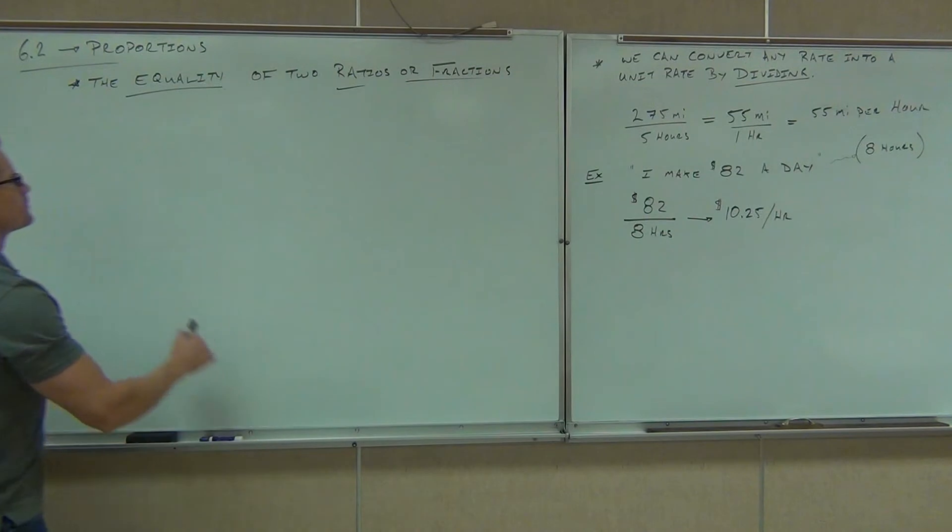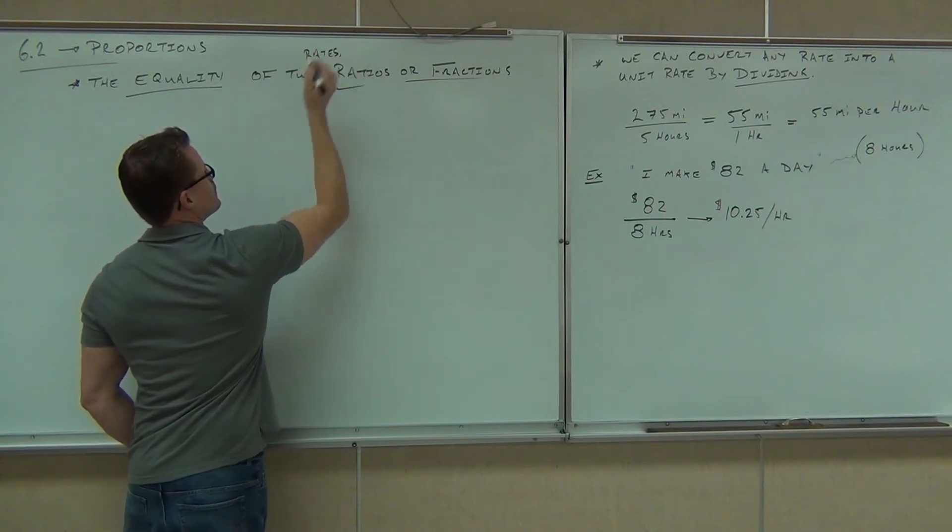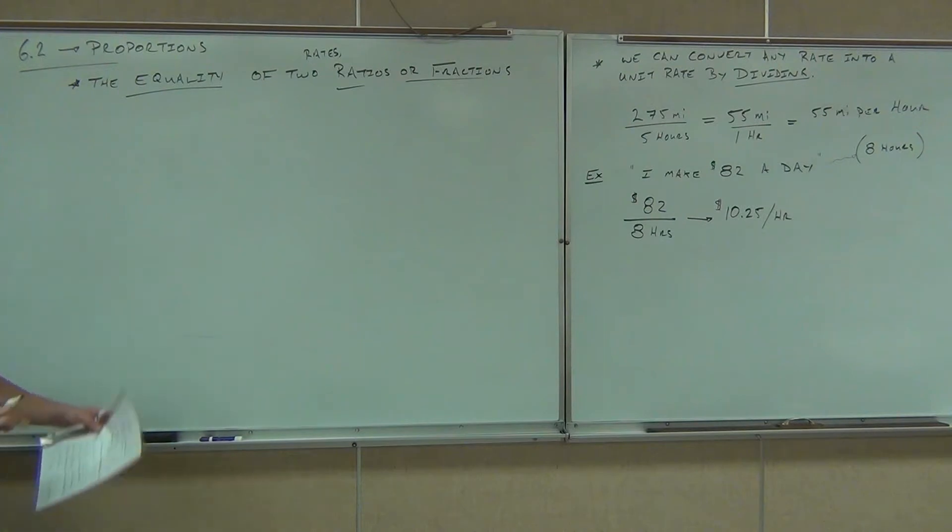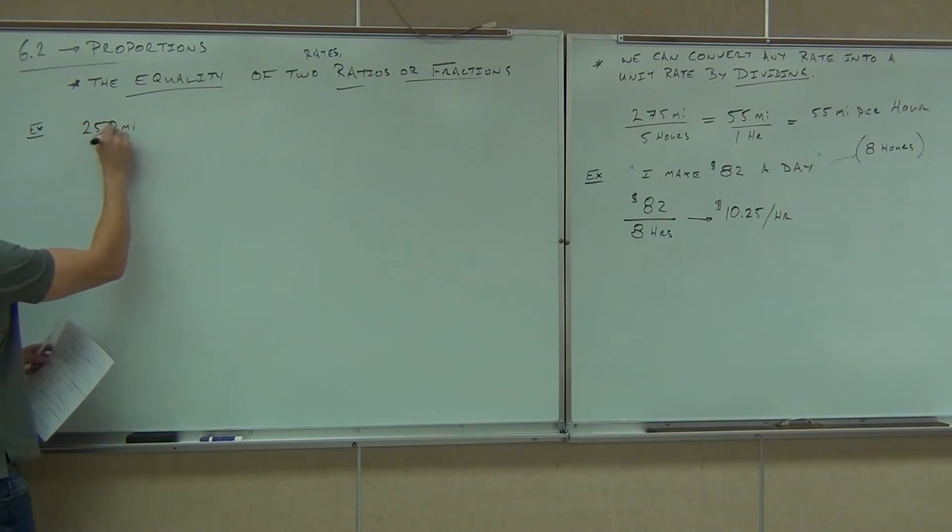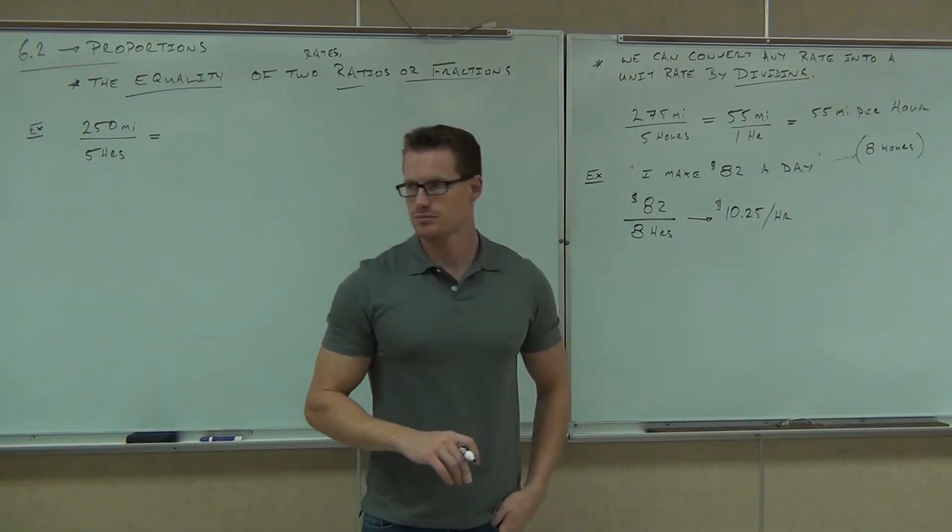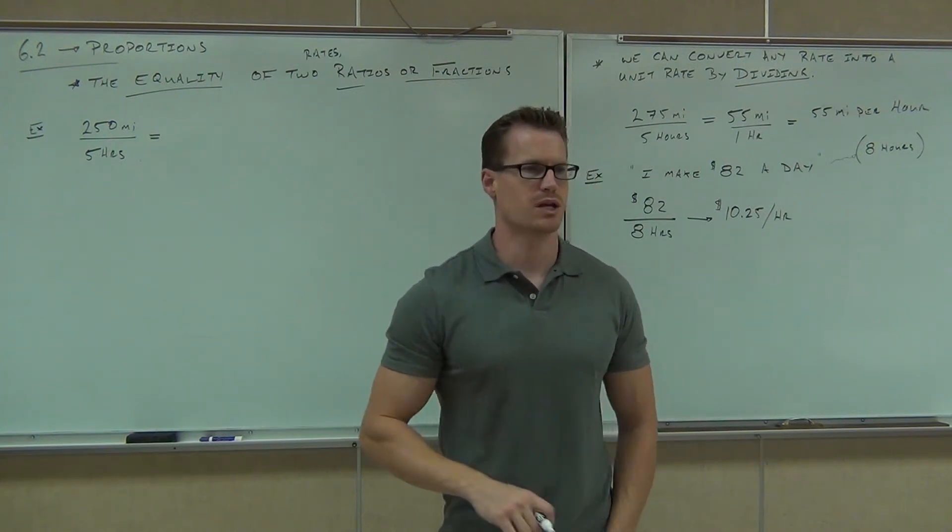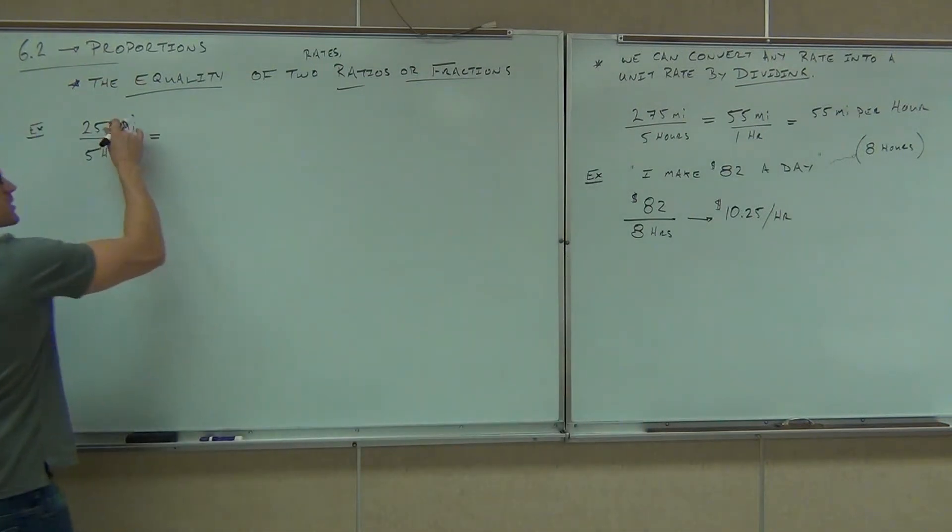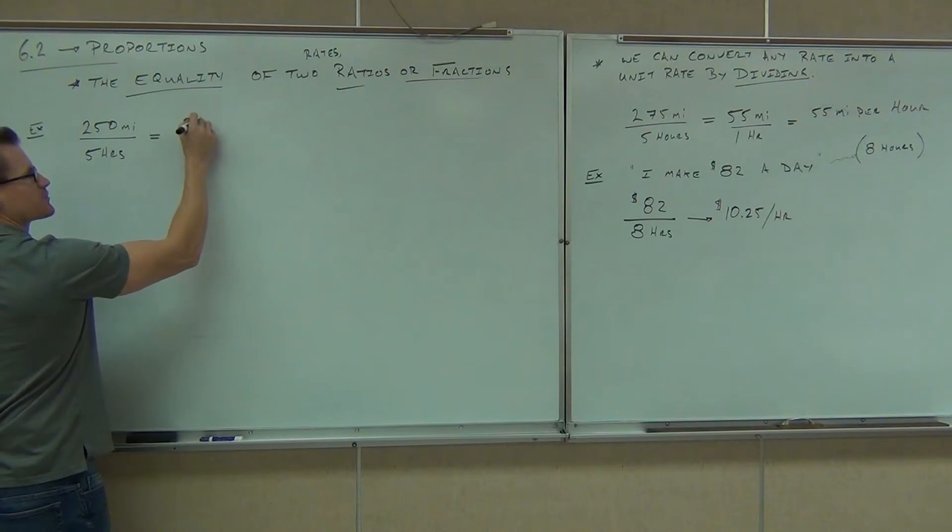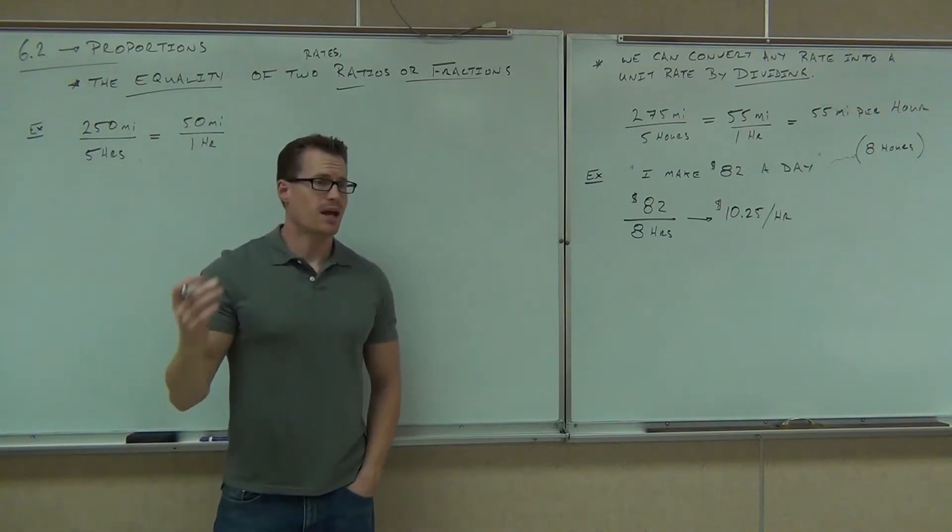So the equality of two ratios or fractions. Let me give you, for instance - I'll include up here rates as well - the equality of two rates, ratios, or fractions. Let's say you went 250 miles in five hours. How far did you go in one hour, probably? Let's pretend you went at constant speed the whole entire time. You went 50 miles. So would you agree that 250 miles over five hours is the same thing as 50 miles over one hour? Is that true? That's a proportion. It's just the equality of two fractions.